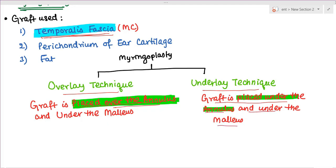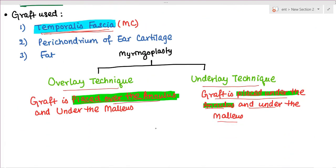We know that tympanic membrane has three layers: epithelial layer, fibrous layer, and mucosal layer. Since there is a perforation, the fibrous layer is almost gone, but there is fibrous layer at the side known as annulus. In overlay technique, we lift the outer epithelial layer and place the graft over the mucosa. We take the handle of malleus and bring it over the graft. Since we are placing the graft over the annulus on the fibrous layer, it is known as overlay technique.